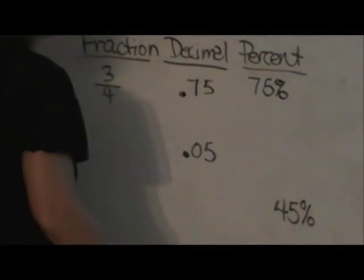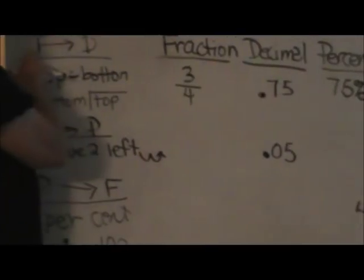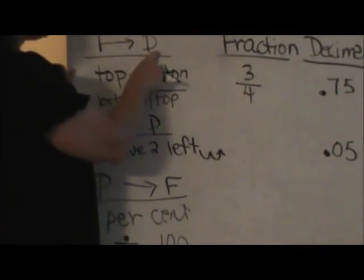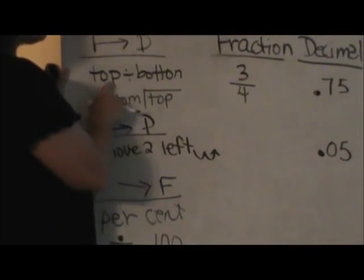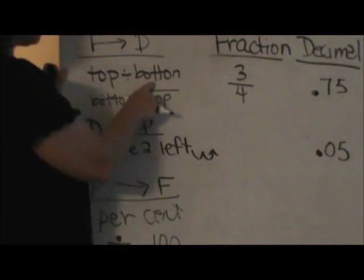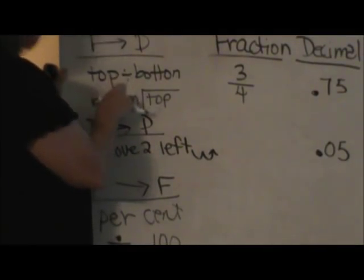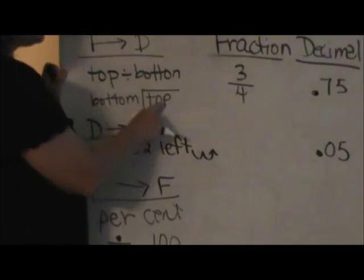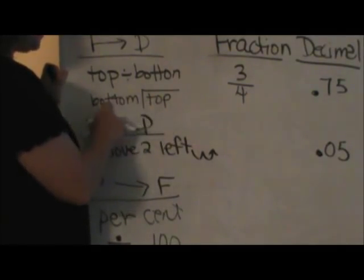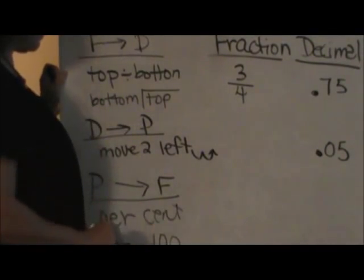Let's go over here and look at the rules. To go from a fraction to a decimal, you're going to take the top divided by the bottom or the numerator divided by the denominator. The top or numerator goes inside your division bar and the bottom or denominator is on the outside.